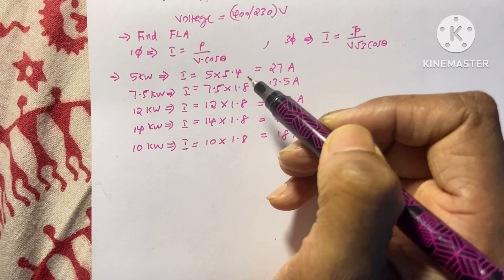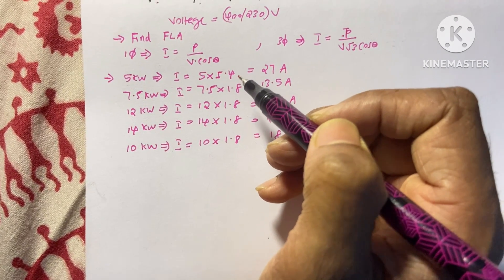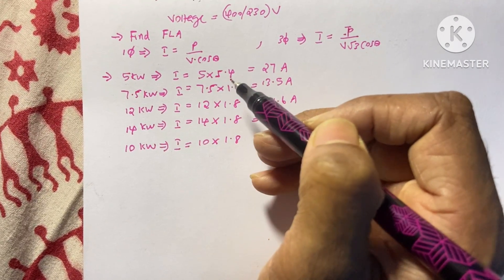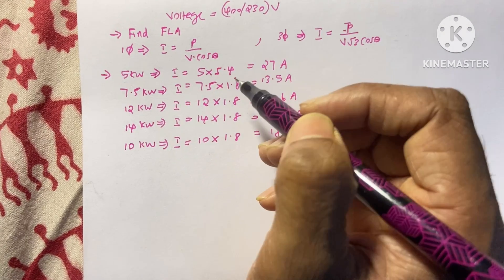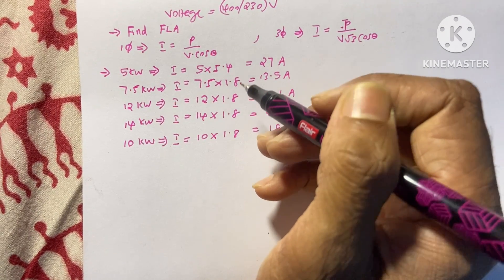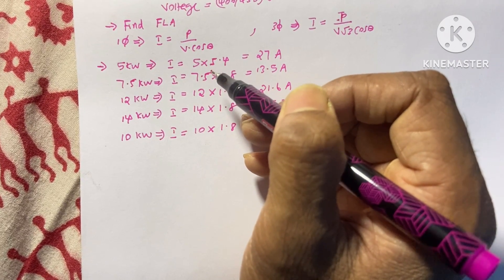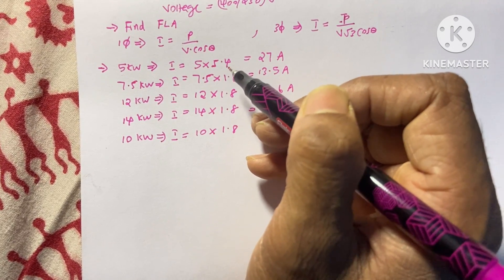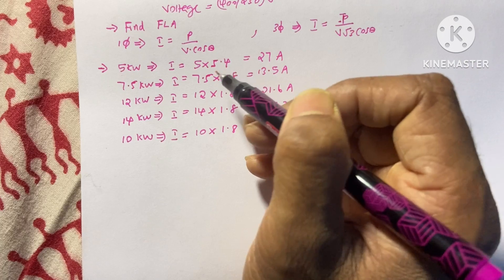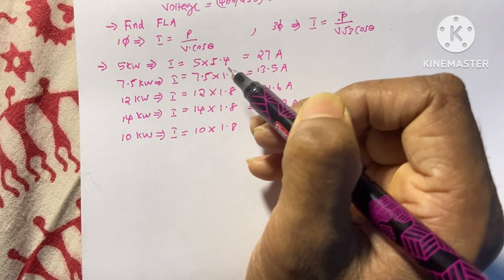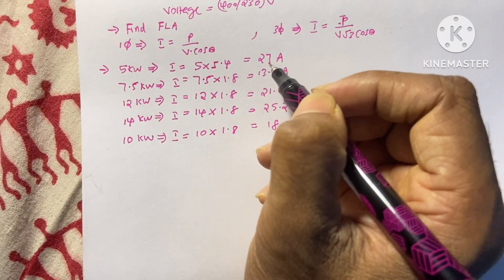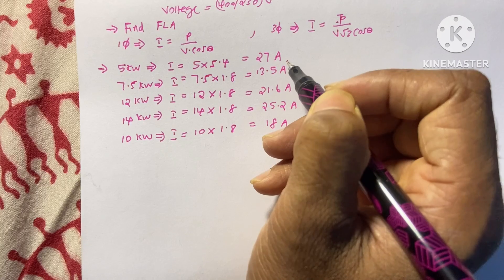I already made a video of how to find the full load ampere in this way. If you want to see that video, please visit my channel. So for the single phase motor 5 kilowatt, the current is 5 into 5.4. This 5.4 is the magic value. So we will get 27 ampere full load ampere.